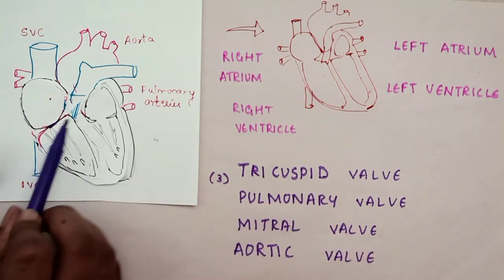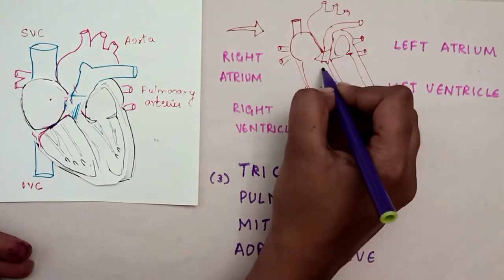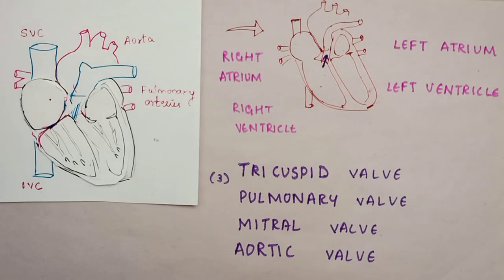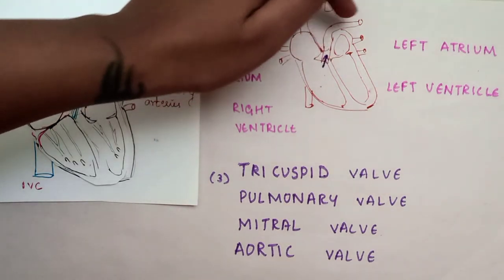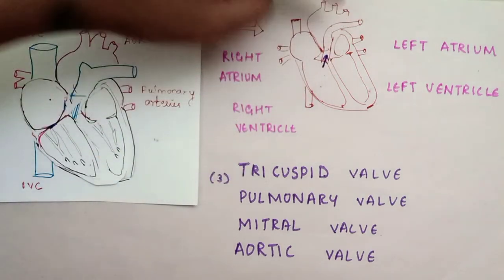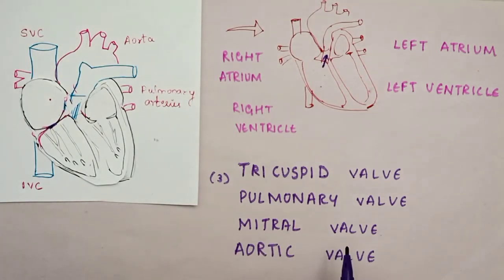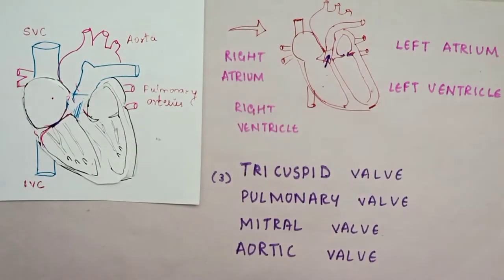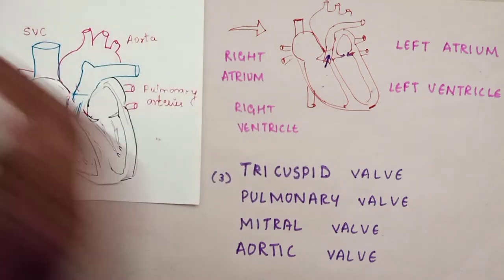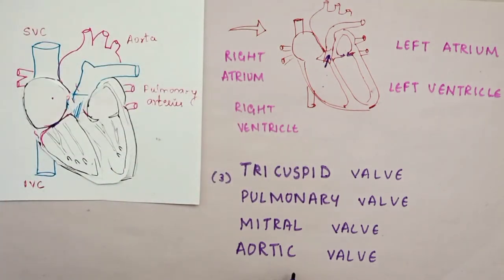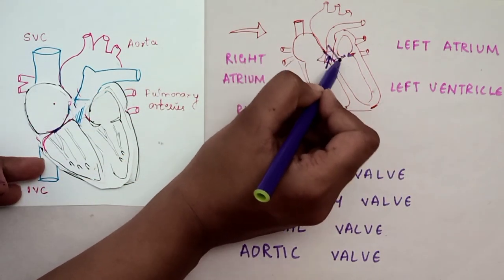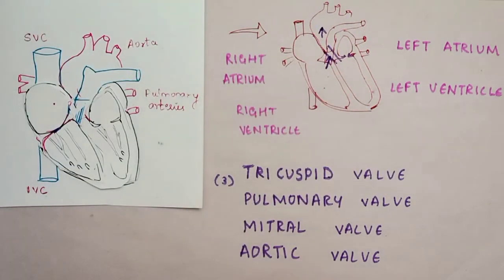The pulmonary valve is between the right ventricle and pulmonary arteries, carrying blood to the lungs. The mitral valve, also called the bicuspid valve, is between the left atrium and left ventricle, having two cusps. The aortic valve is between the left ventricle and aorta, sending blood to the whole body.